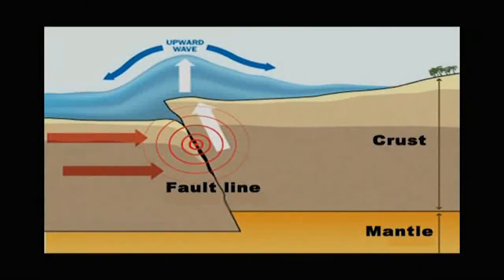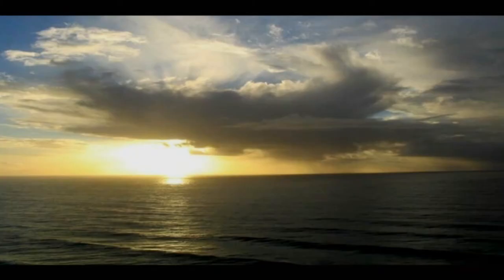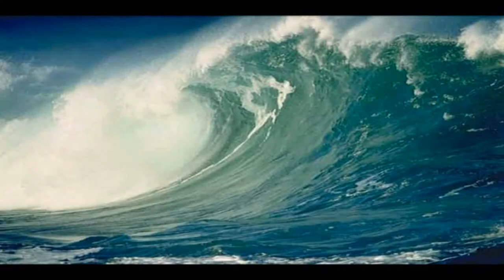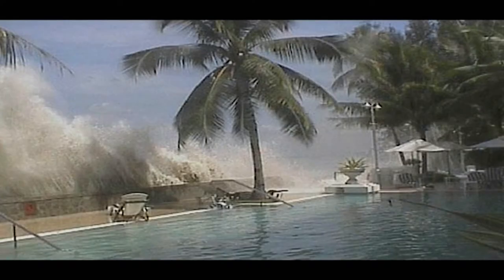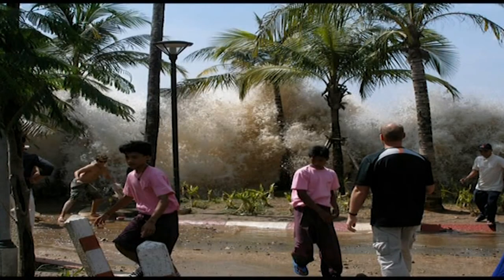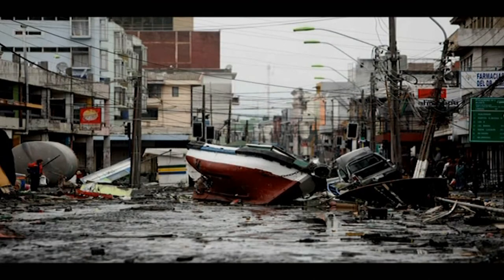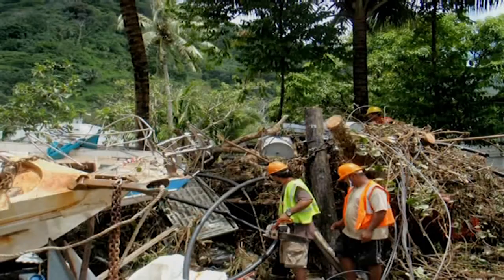Tsunamis are sea waves caused by the rapid rise of the sea floor during an earthquake. In the open sea, tsunami waves often run for hundreds of kilometers in length and may pass unnoticed. When they reach the continental shelf close to land, water piles up to heights of 12 to 15 meters. They have enormous power to take away whatever lies along the coast.